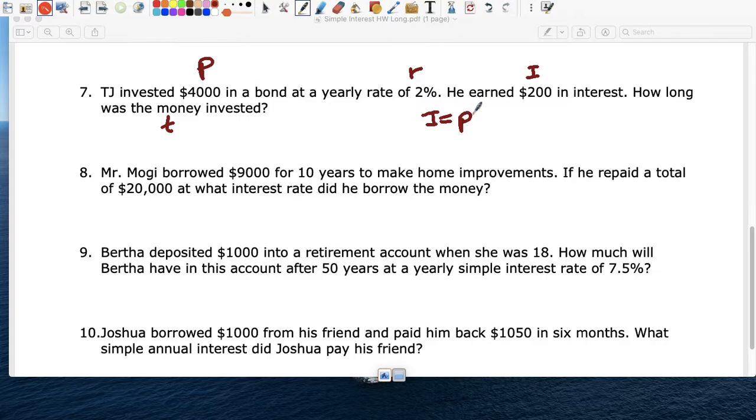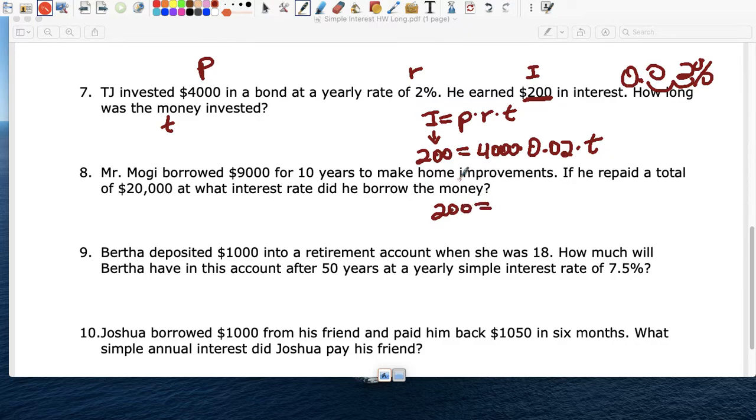So I equals P times R times T. How much did he make? He earned $200. So that's your I. What was your principal? $4,000 deposited. What was the rate? 2%, which transforms to 0.02. And T, the time, is what we want. So 200 equals, and 4,000 times 0.02 equals 80. 80T, right? 4,000 times 0.02 is 80T. Divide 200 by 80. Dividing both sides by 80. T equals 2.5.